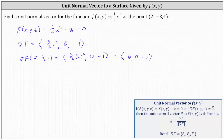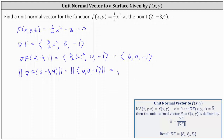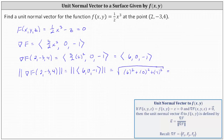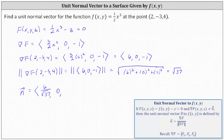Because we want a unit normal vector, we need the magnitude to equal one. The magnitude equals the square root of 6² + 0² + (-1)², which simplifies to the square root of 37. Therefore, the unit normal vector n has an x-component of 6/√37, a y-component of 0, and a z-component of -1/√37.